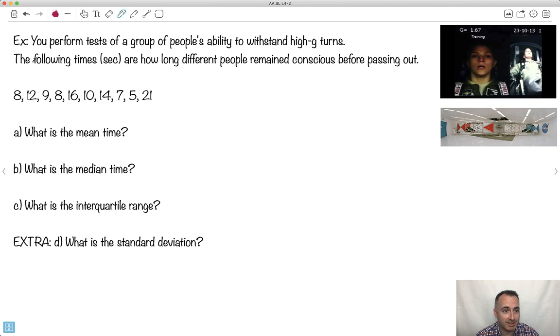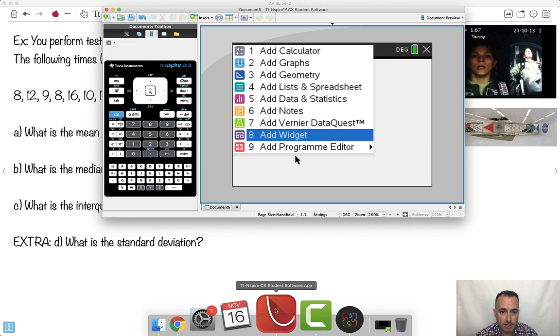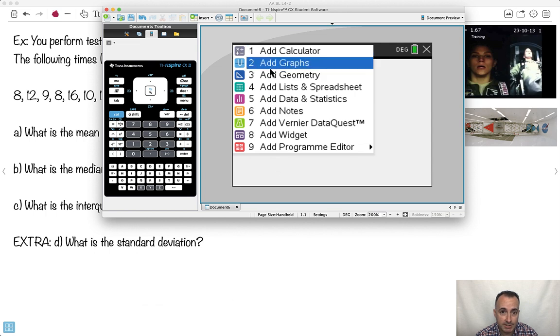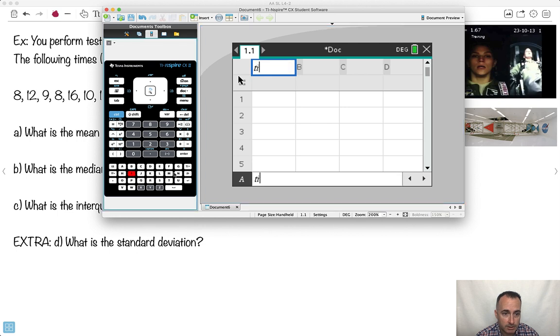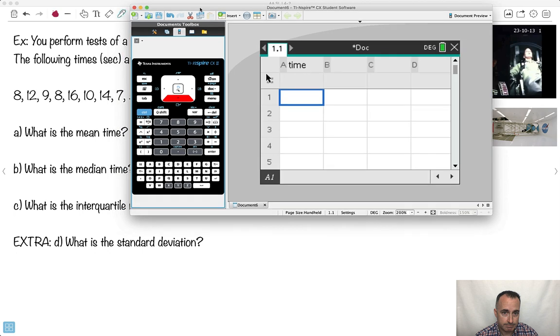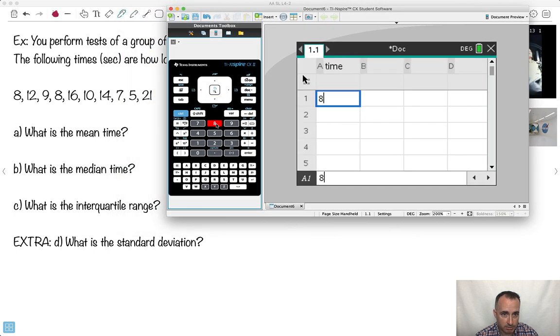Anyhow, let's actually look at this real thing here. So we've got some times here, how long people stayed awake before passing out. So what's the mean time, what's the average. So let's just go through how to do this on your calculator. So what did I say to do, we go to list and spreadsheet, and I'm going to call it maybe time, I'll actually call it that, T-I-M-E, time. So I've named it. Now I'll just put in all my numbers, so I go 8 and 12, I'll just put them all in here. 9, 8.